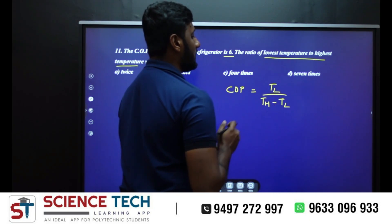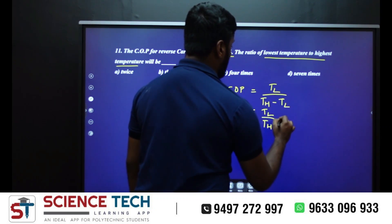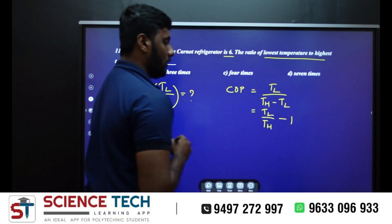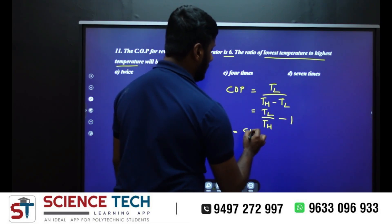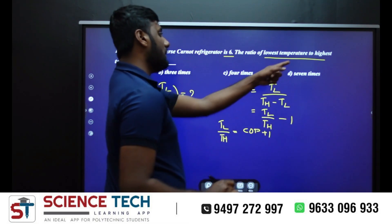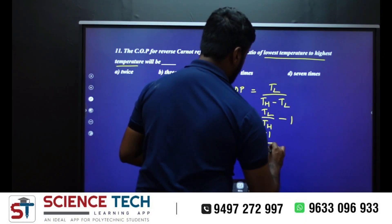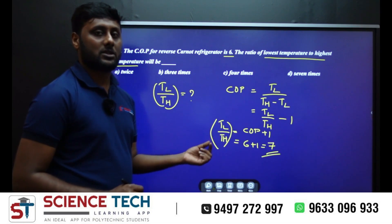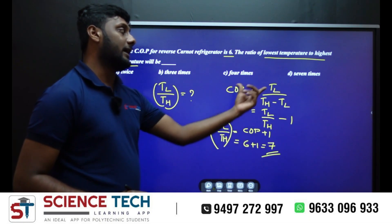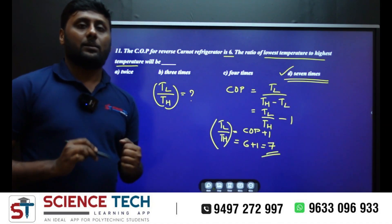TL divided by TH is equal to 1. COP value is 6, so 6 plus 1 which is equal to 7. So 7 is our correct answer.